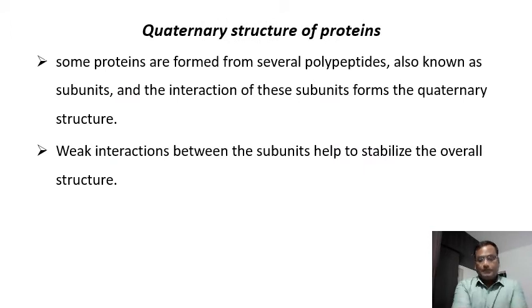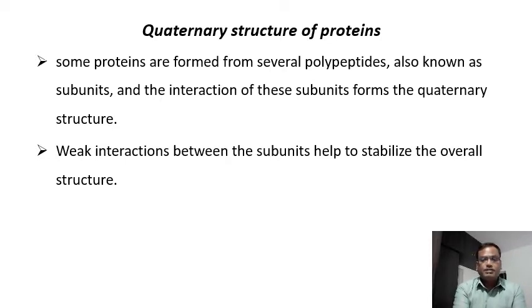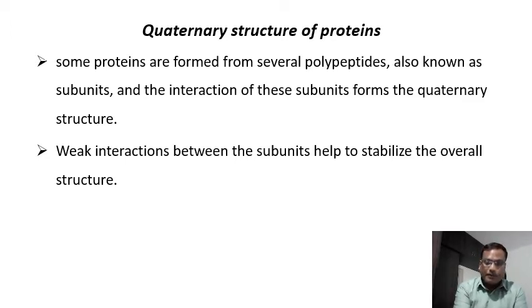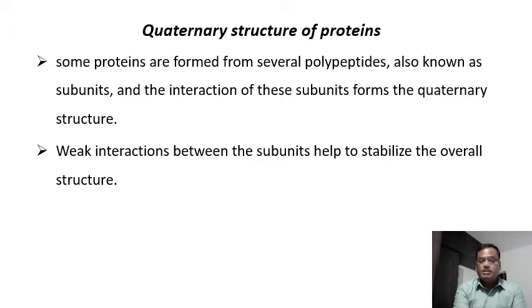Some proteins attain a quaternary level, which is called the quaternary structure. Some complex proteins are formed from several polypeptides — two or more — and we call these polypeptides subunits. The interaction of all these subunits results in the quaternary structure, which is the functional structure of that particular protein.